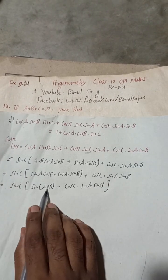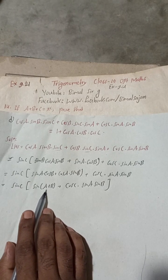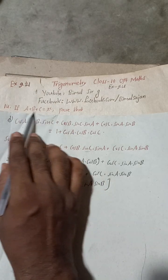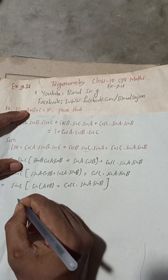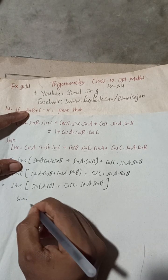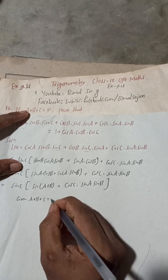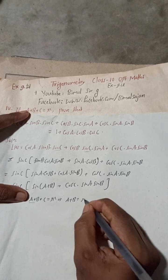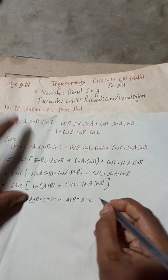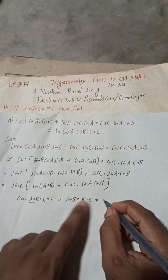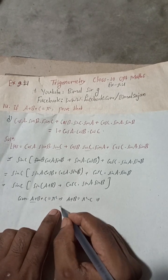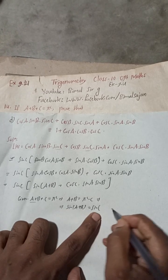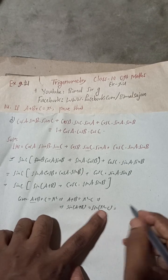Now we use the given condition. Given: A + B + C = π radians. This implies A + B = π − C. Taking sin on both sides, sin(A+B) = sin(π − C).